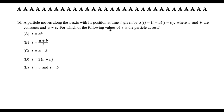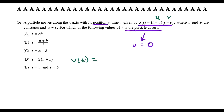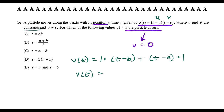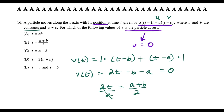Question sixteen: when is the particle at rest? Velocity = 0. The position function is x(t) = (t − a)(t − b), so velocity = (t − b) + (t − a) = 2t − a − b. Setting v = 0: 2t = a + b, so t = (a + b)/2, which is choice B.